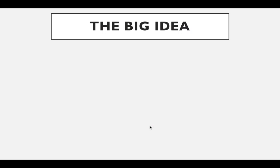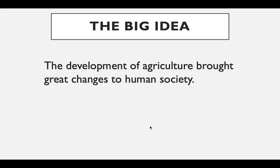The big idea for this section is that the development of agriculture brought great changes to human society. The key is that farming allowed society to grow and become more complex. All right, thanks.